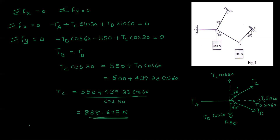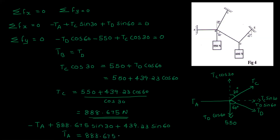Now, minus TA plus TC value. We count the value: 88.675 sin 30 plus 439.23 sin 60. The value of TA is equal to 88.675 sin 30 plus 439.23 sin 60, which equals 824.721 Newton.